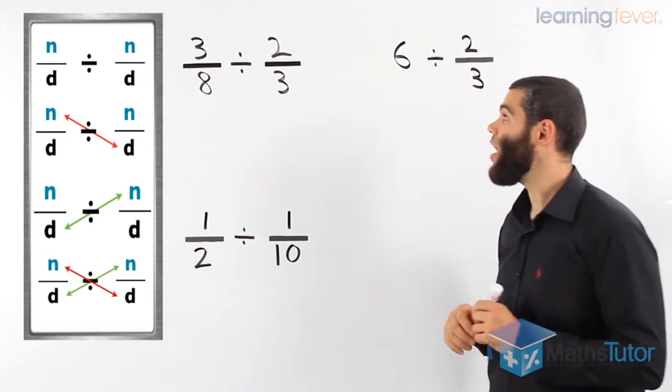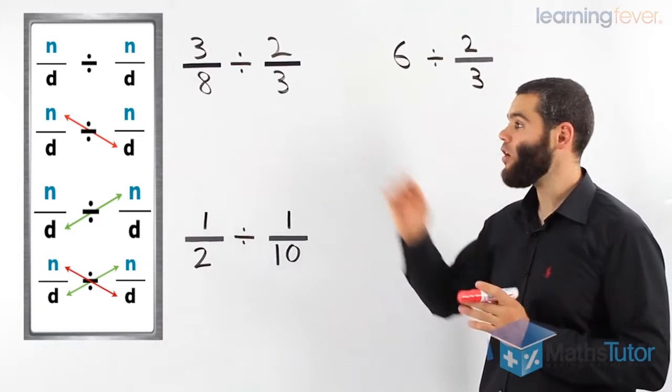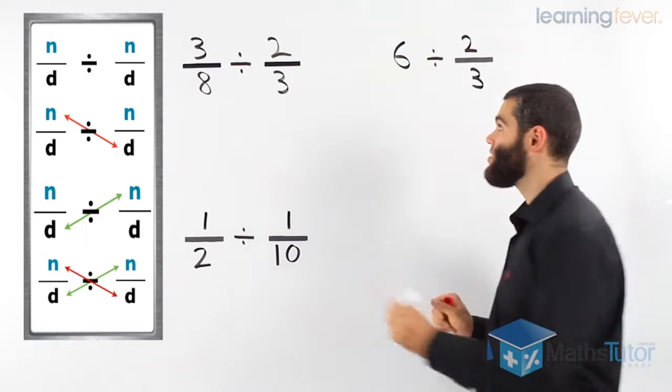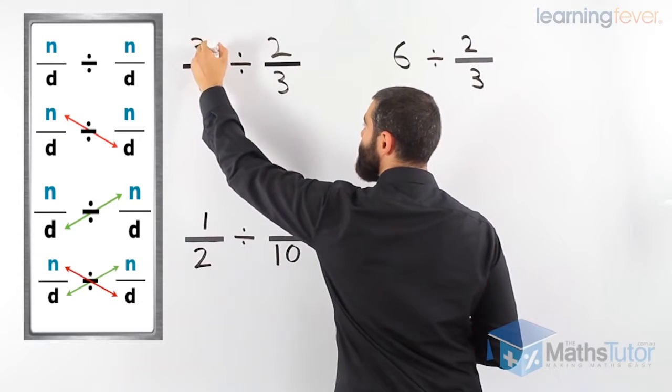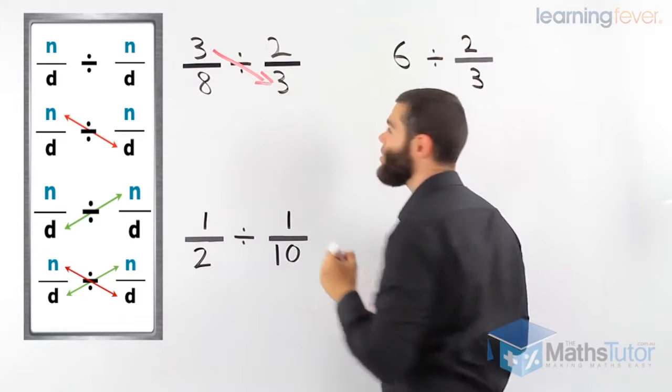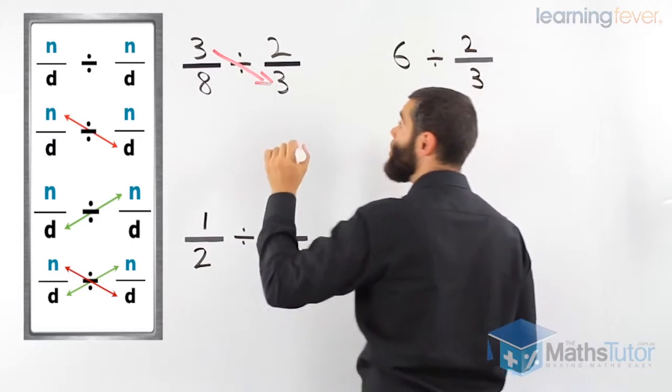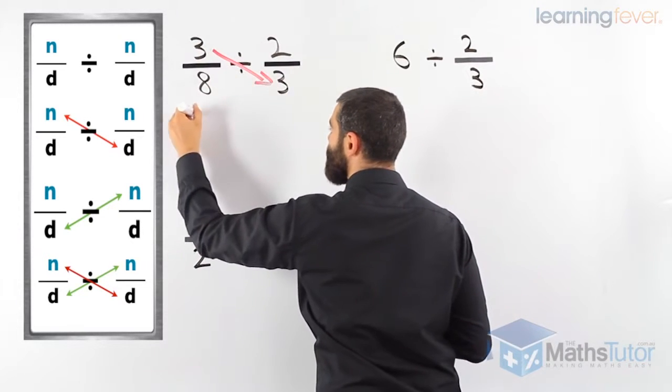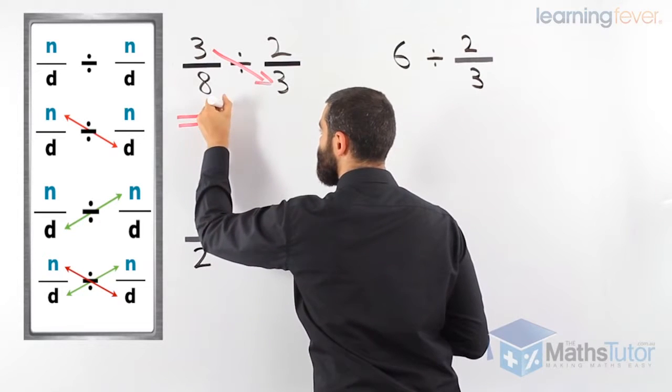3 eighths divided by 2 thirds, we follow this cross-multiply rule. So, we start with the top numerator going down to the second denominator. We multiply 3 times 3, 9.